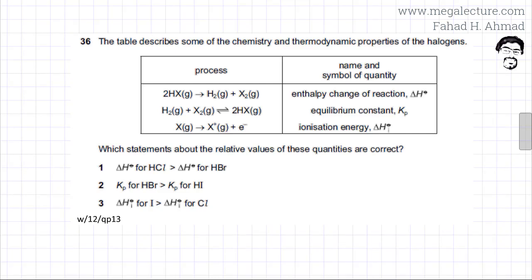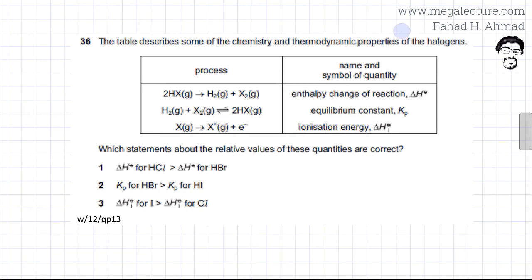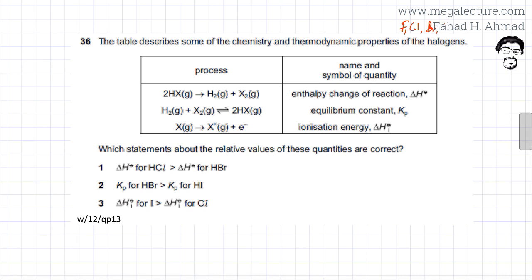The following part of a question states that the table describes some of the chemistry and thermodynamic properties of the halogens. It's all related to halogens, which is group 7 or group 17. So we're talking about fluorine, chlorine, bromine, iodine, etc.